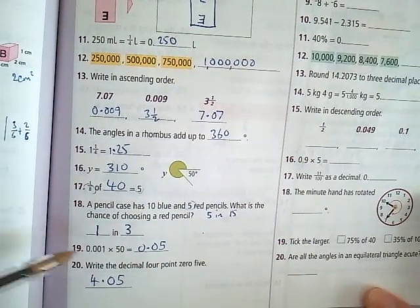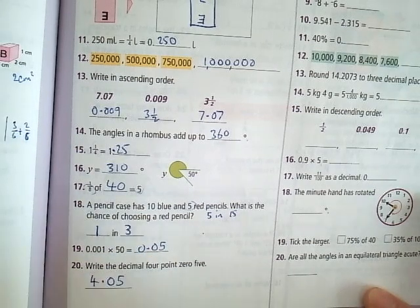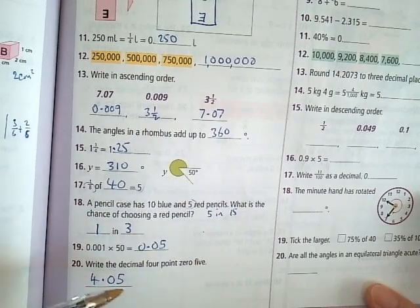Question 19. 0.001 multiplied by 50 is 0.05. Question 20. Write the decimal 4.05. Doesn't get much easier. 4.05.